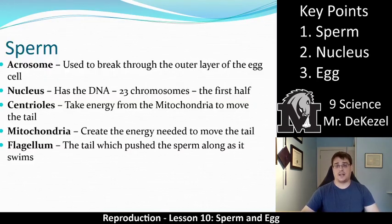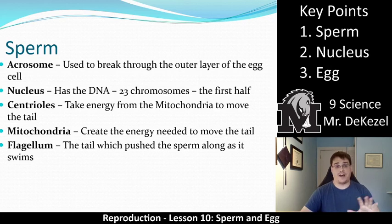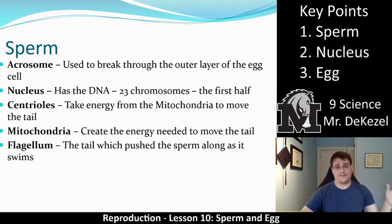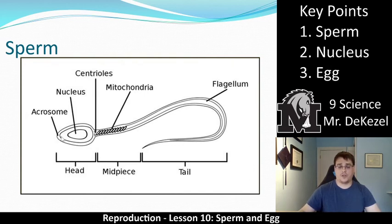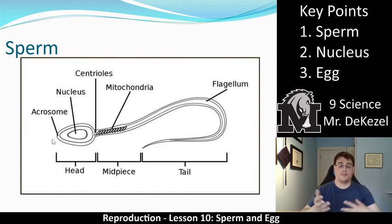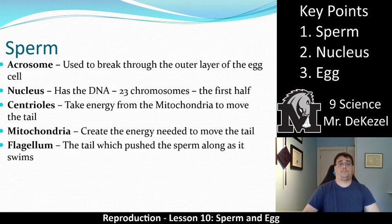First, we'll talk about the sperm — that's key point one of three. A sperm is made up of five parts, which you can see in the diagram in your notes. Moving from left to right, the first part is the acrosome. The acrosome is used to break through the outer layer of the egg cell. It is essentially a little bomb on the front — when it touches the egg, it explodes and makes a hole, allowing the rest of the sperm to get in.